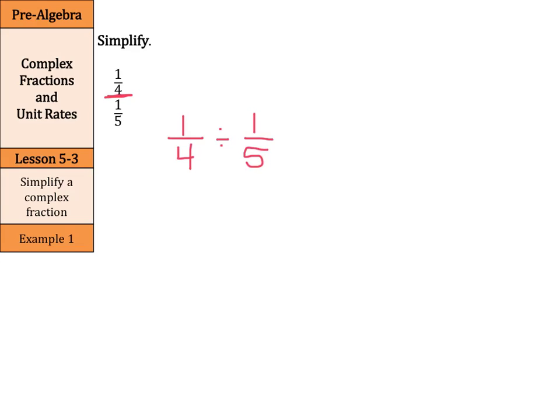Now, recall, when we divide fractions, we actually multiply by the reciprocal, or we keep, change, flip. So we have one-fourth. We change our division to multiplication. And we flip, or take the reciprocal, or multiplicative inverse of that last one, five over one.